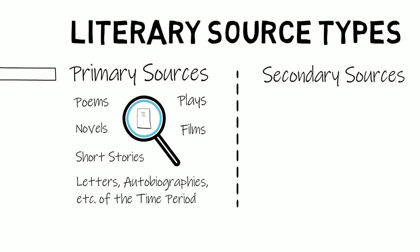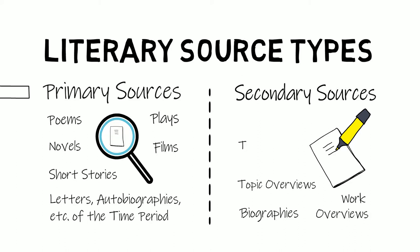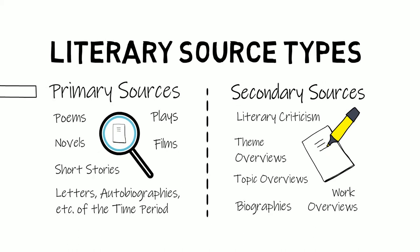A secondary source is one that analyzes the primary source you're researching or a related topic. The paper you're writing is itself a secondary source, since you are analyzing a primary literary work or author. Other secondary sources help to support your analysis, such as biographies, work topic or theme overviews, and literary criticism. These sources will discuss some aspect of the author's life, works, themes, time period, or style.